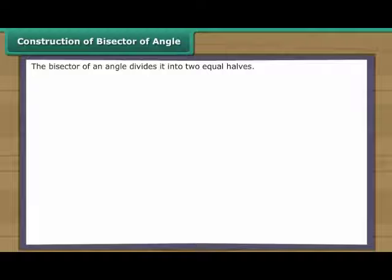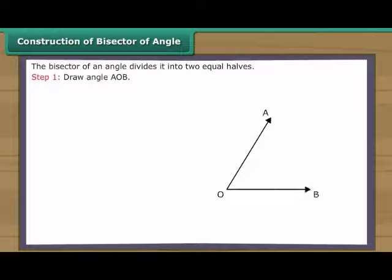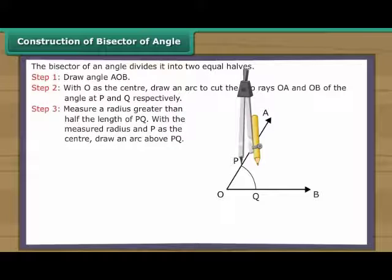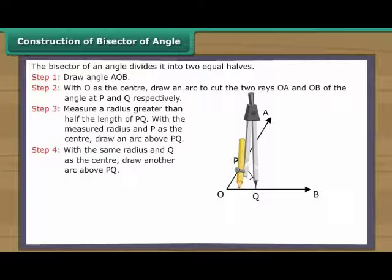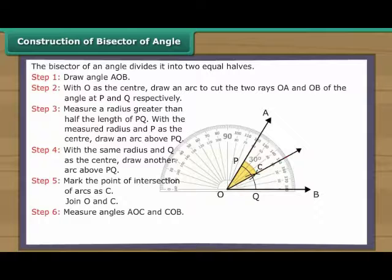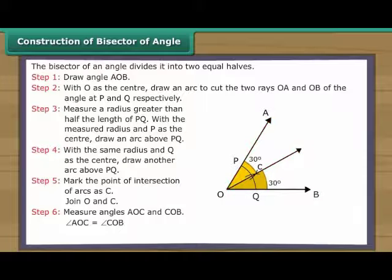Construction of bisector of angle. The bisector of an angle divides it into two equal halves. Draw angle AOB. With O as the centre, draw an arc to cut the two rays OA and OB at P and Q respectively. Measure a radius greater than half the length of PQ. With P as the centre, draw an arc above PQ, and with Q as the centre draw another arc. Mark the point of intersection of the arcs as C. Join O and C. Measure angles AOC and COB — angle AOC equals angle COB. Therefore OC is the bisector of angle AOB.